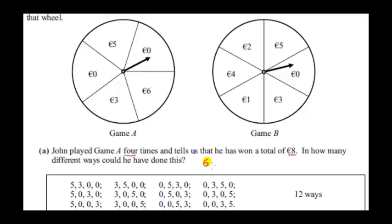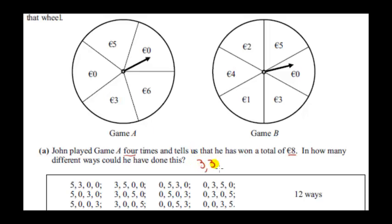Because if the arrow stopped at six euros, in order to get a total of eight we would have to get zero, zero — that's one possibility. But the number two is not on this wheel. Another option is six, one, one, followed by a zero, but there's no one on that wheel. So six cannot appear.